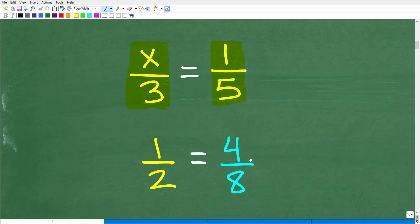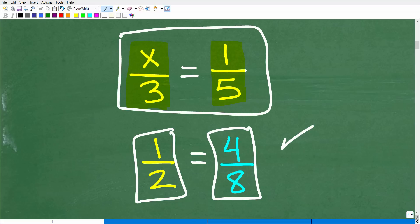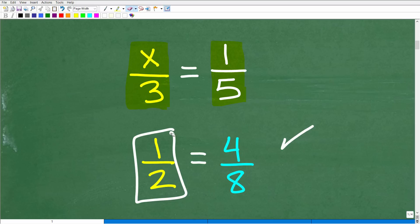So by definition, when you have one fraction equal to another fraction, this is a proportion. Okay. So I want you to recognize this equation as one fraction equaling to another fraction. Now, the beautiful thing about proportions is there is this awesome property, okay, called the cross product.